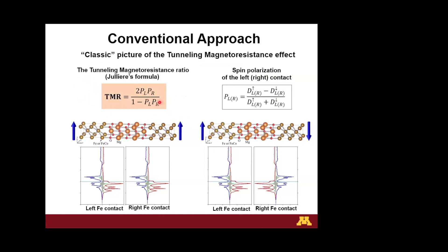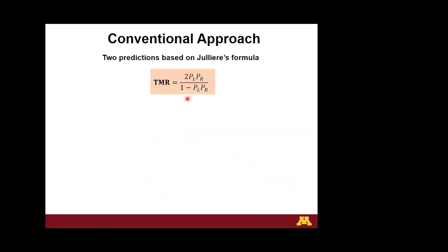Julliere went further and proposed a formula for calculating the magnitude of the TMR effect. The Julliere formula for the TMR ratio is: 2·P_L·P_R / (1 − P_L·P_R), where P_L and P_R are the spin polarizations of the left and right ferromagnetic contacts, defined in relation to their density of states. As long as you know the density of states for each spin species in the contacts, you can calculate the polarization and predict the TMR.